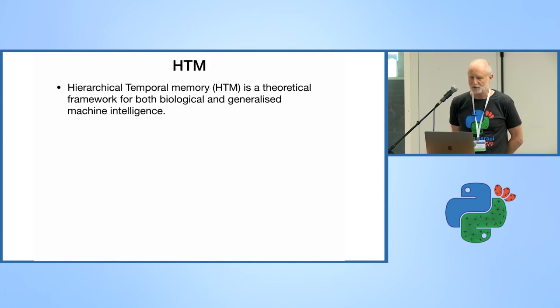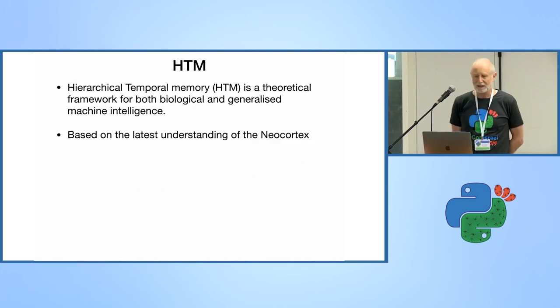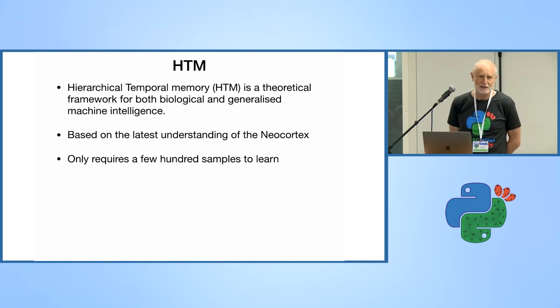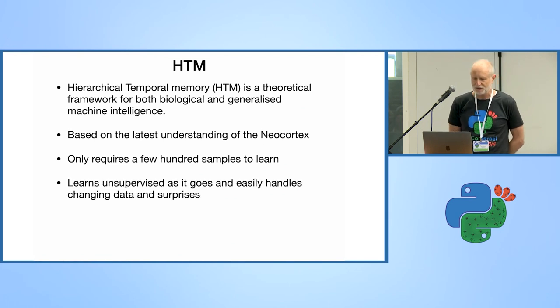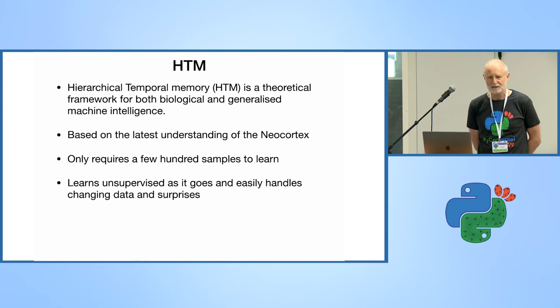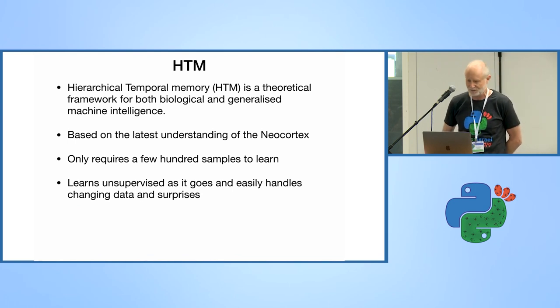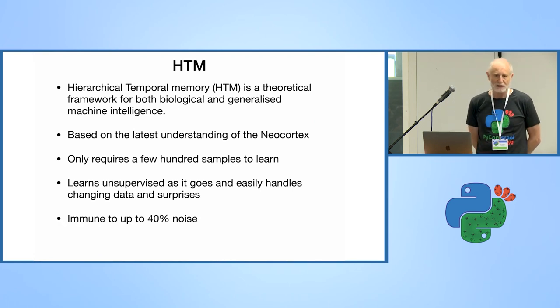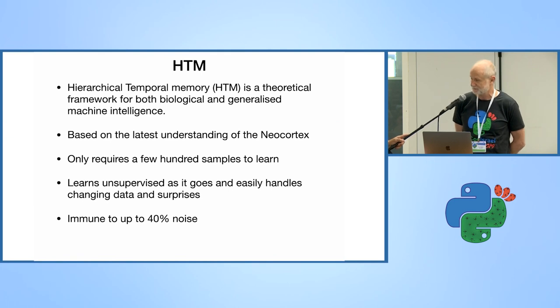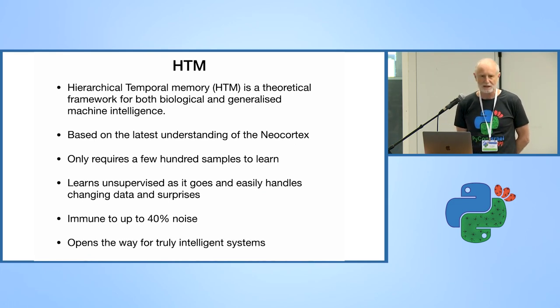HTM, or hierarchical temporal memory, is a theoretical framework for biological and generalized machine intelligence. It's based on our latest understanding of the neocortex. In contrast to DNNs, it only needs a few hundred samples to start making predictions. It learns unsupervised, learns as it goes, and can correct its mistakes. Incredibly, it's immune to about 40% noise. Most importantly, it opens up the way to truly intelligent systems.